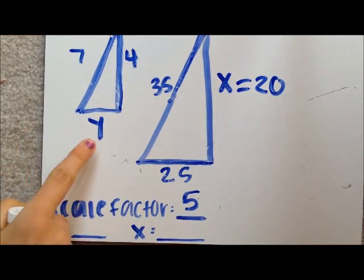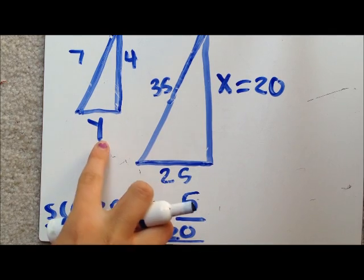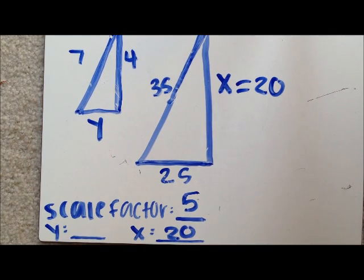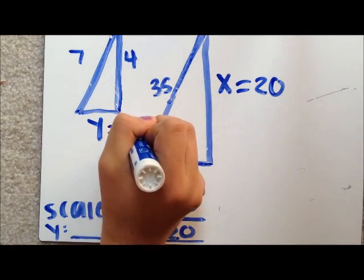To find the Y, you must do the smaller one, so you divide. 25 divided by 5 is 5, so you know Y equals 5.